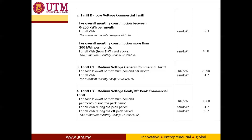Tariff B is the low-voltage commercial tariff. It has two types: for overall monthly consumption between zero to 200 kilowatt-hours per month the rate is 39 cents, while if the commercial block uses more than 200 kilowatt-hours, the rate is around 43 cents.